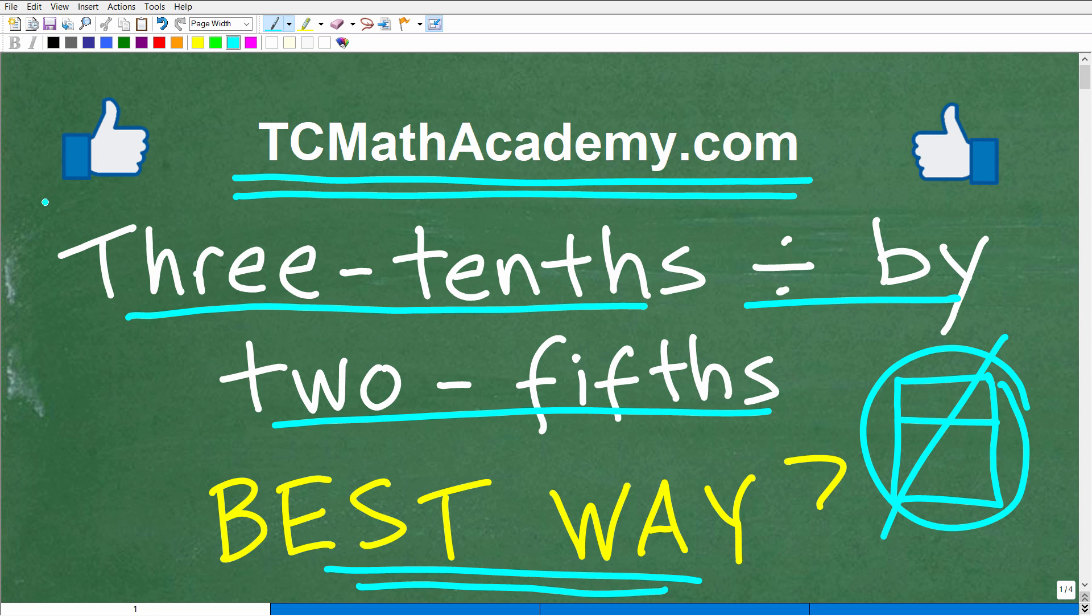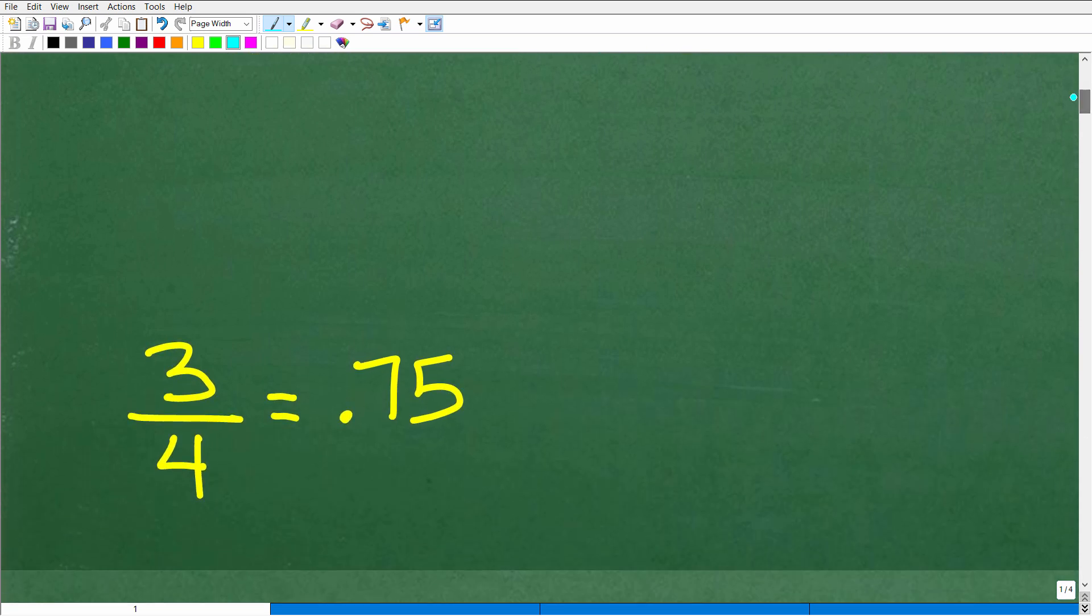And if this video helps you out, don't forget to like and subscribe as that definitely helps me out. Okay, so let's go ahead and take a look at the answer. Again, 3 tenths divided by 2 fifths. So the answer would be one of the following.